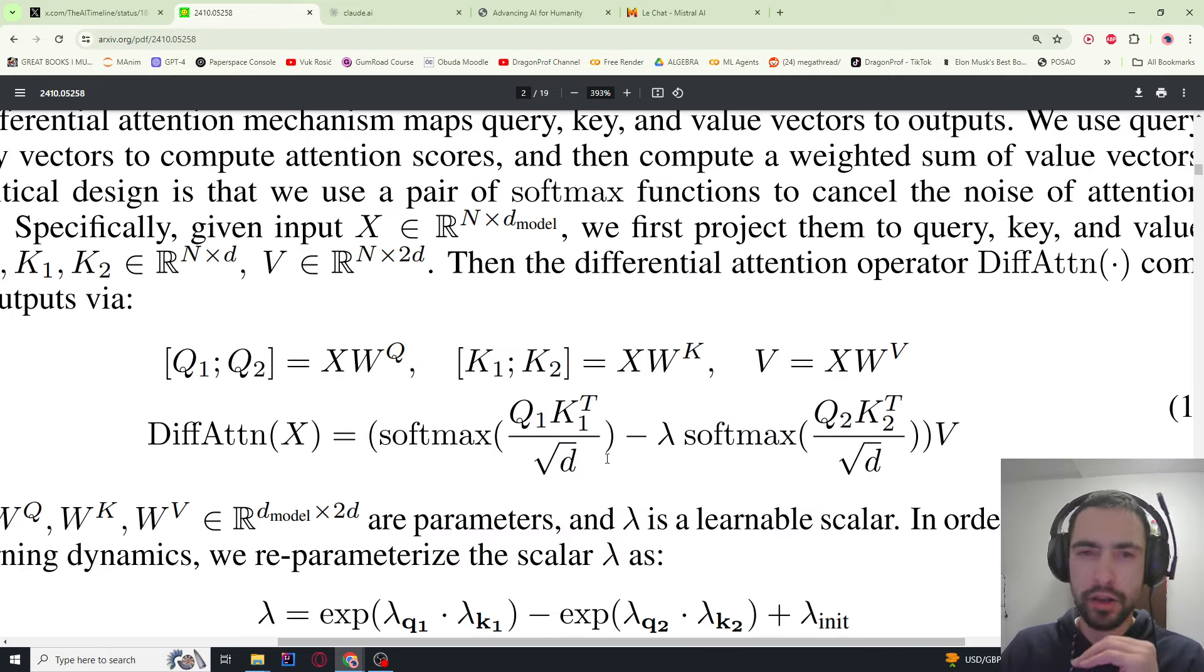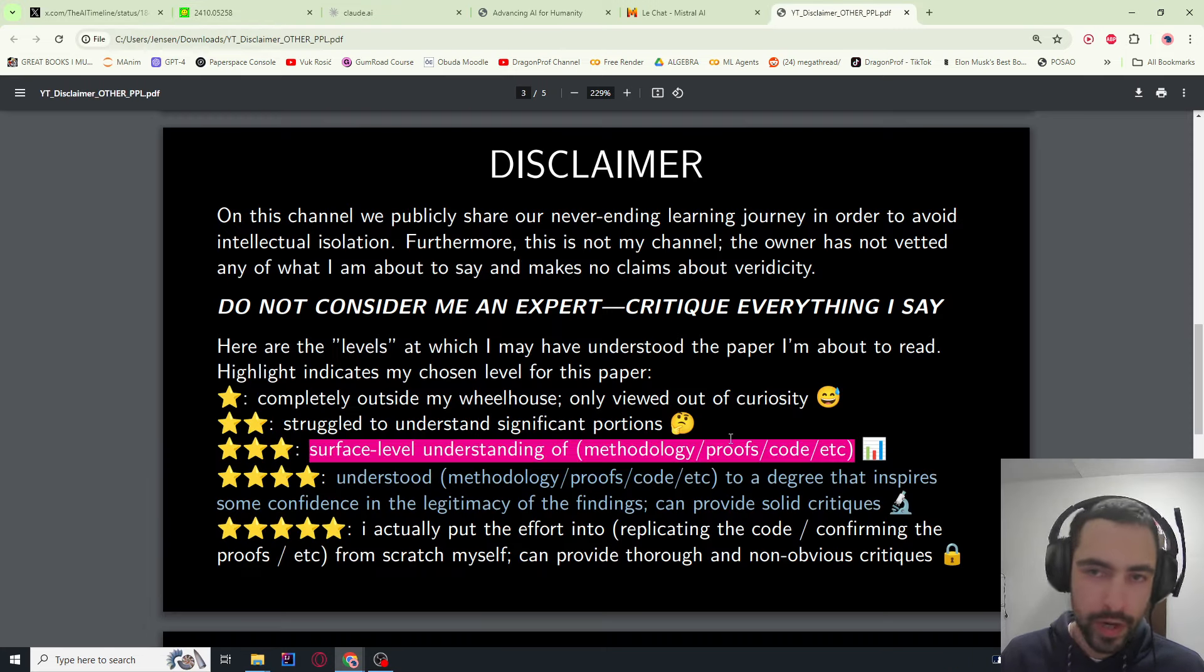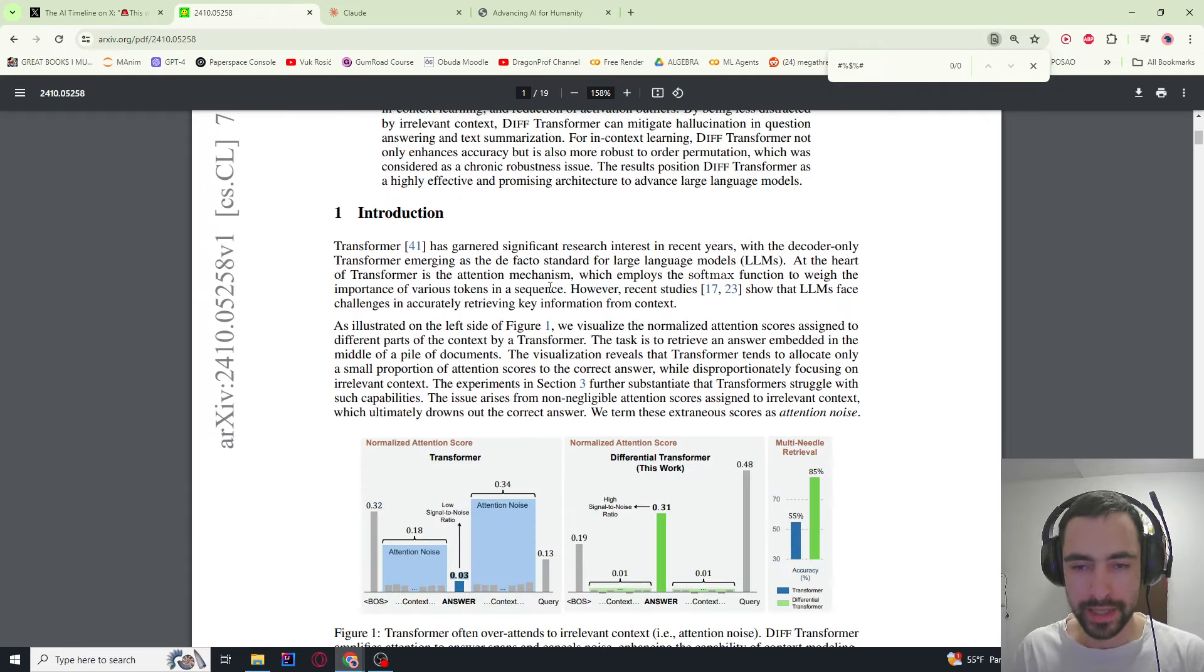Just by roughly looking into this formula, they have the standard attention calculation and they also calculate the noise, so this is attention noise. This is attention to irrelevant tokens, and then they subtract attention to irrelevant tokens to get the attention to relevant tokens. It has better key information retrieval, hallucination mitigation, in-context learning, and reduction of activation outliers which helps in quantization. Quick disclaimer: I understand this at level three, so methodology, proofs, code, maybe even level four where I can compare it to other research papers.